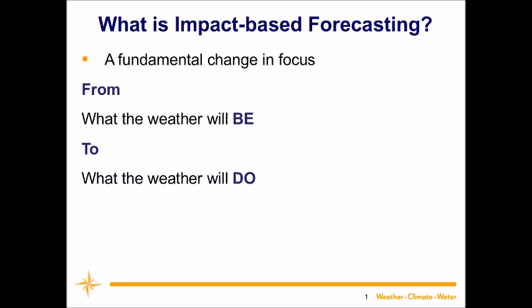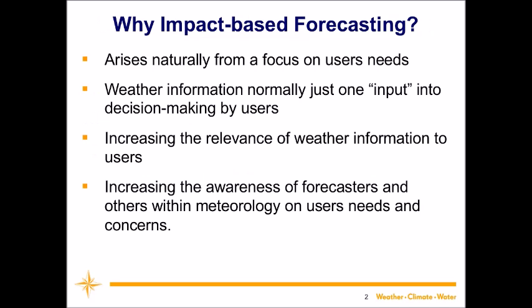In other words, the impact of that weather on society, on users — the great variety of users, from a person going about their normal day-to-day business with very little exposure to weather, to somebody like a farmer, a fisherman, or a pilot who has a very significant exposure by the nature of their activity. The change is really about moving beyond atmospheric science to what the atmospheric phenomena will do when they impact on the work of society.